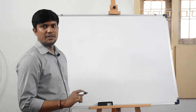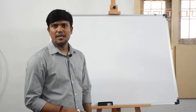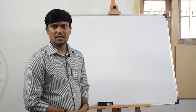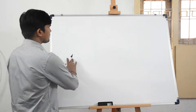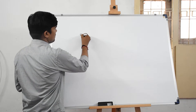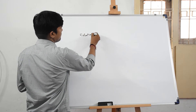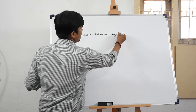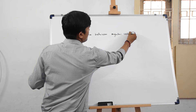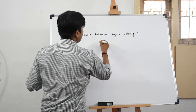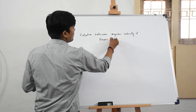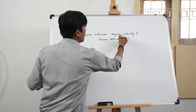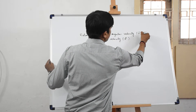Today we will see the relation between angular velocity and linear velocity, because for translational motion also we can define some angular quantities. So if you consider the relation between angular velocity and linear velocity: linear velocity as v vector and angular velocity as omega vector.